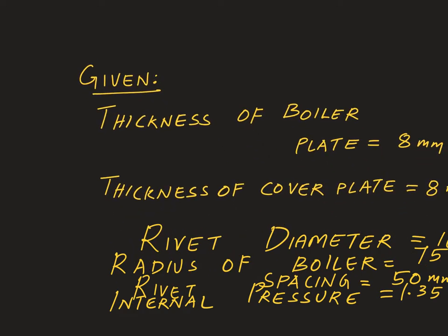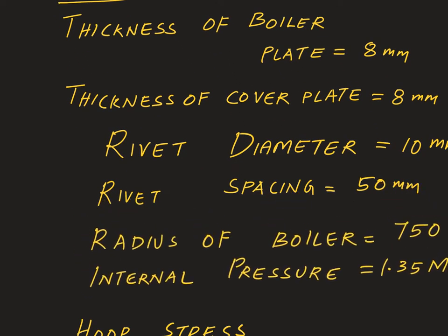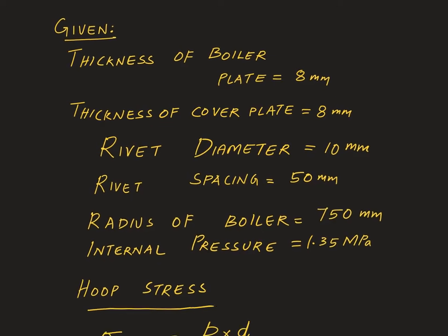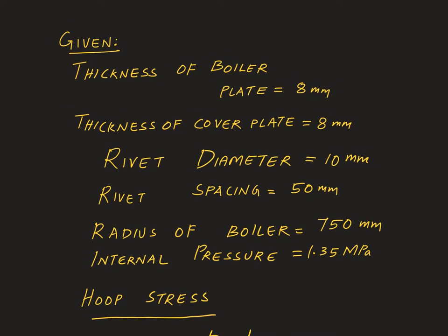When you have a long problem like this, it makes a lot of sense to write down the given quantities first. The thickness of the boiler plate is given, the thickness of the cover plate is given, then the rivet diameter, rivet spacing, radius of the boiler, and internal pressure. It's always better to list them in advance.